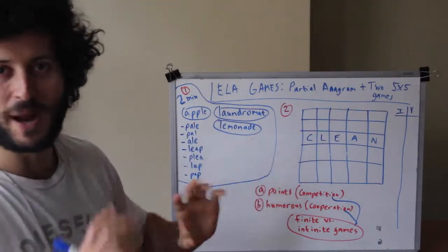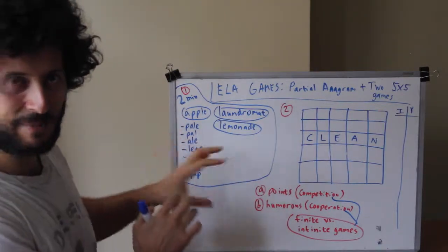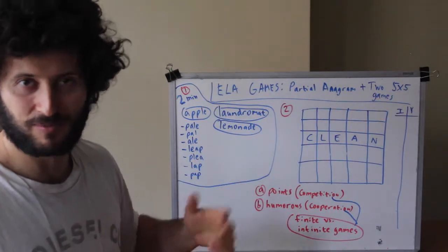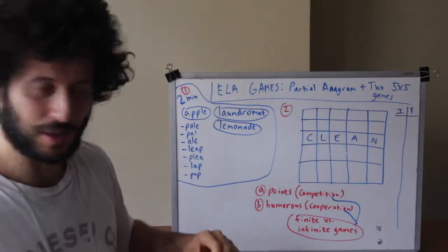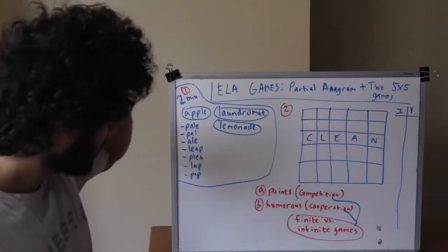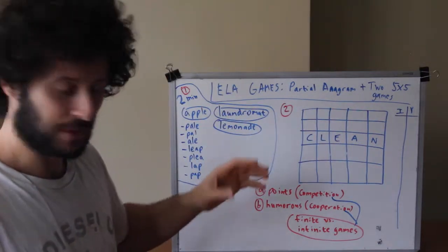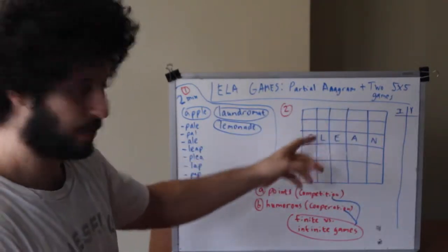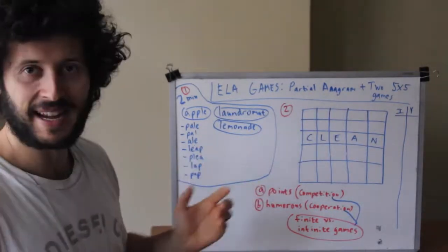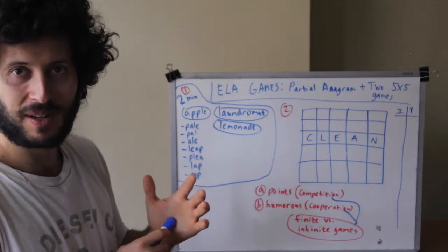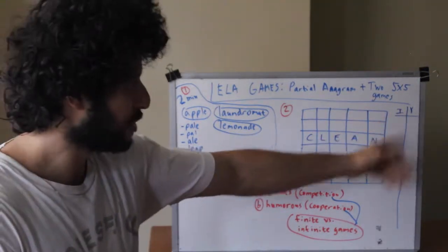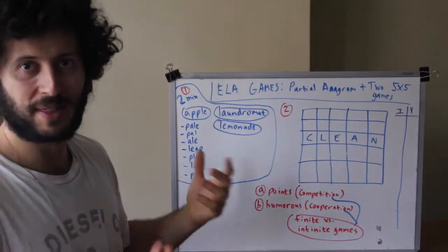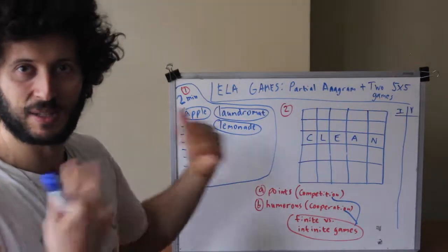Game number two I find way more fun. My dad showed this to me over 20 years ago. So here's the way this game works. You draw a five by five grid and I love this because you could play this anywhere. All you need is a little piece of paper and basically a little scoreboard. So in like 10 seconds you can get a game going.